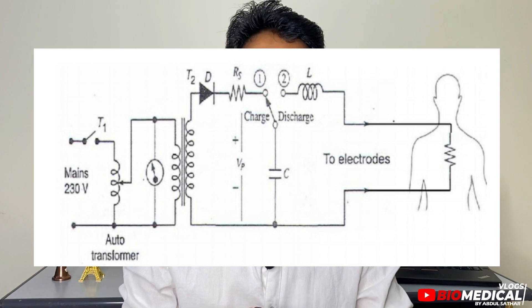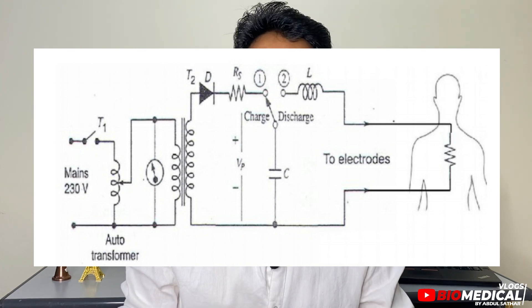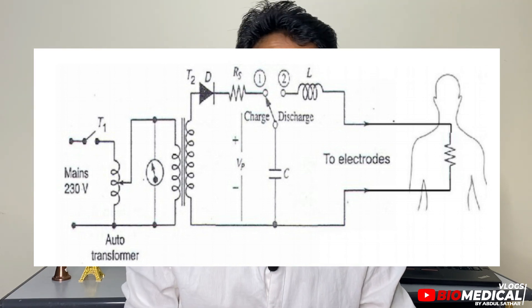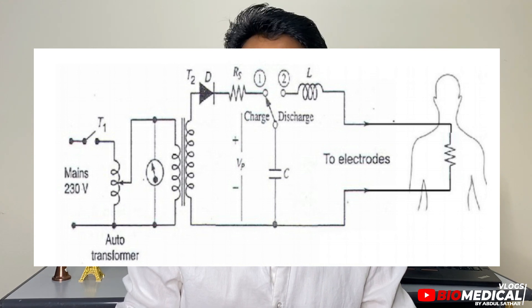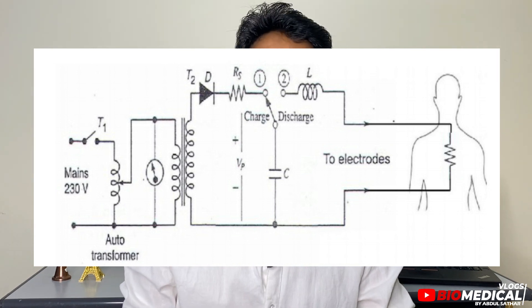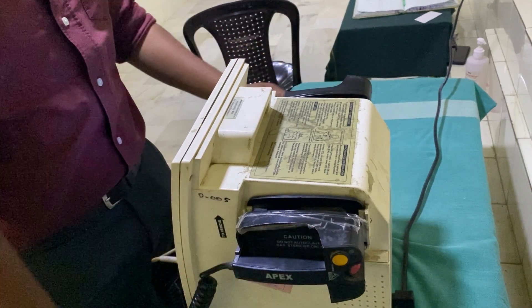The capacitor is one of the most important components of a defibrillator. It stores a large amount of energy in the form of electrical charge, and then rapidly discharges through electrodes across the chest of the patient. When applying the shock, it is important to be careful while delivering it.